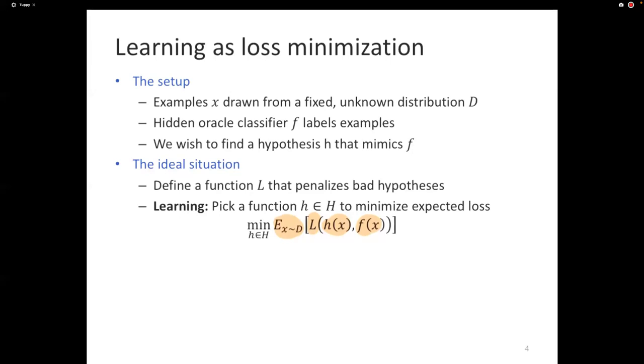And the loss function basically gives you a number that says, when you apply h to this example and produce this label, this is how bad it is. And you find the expected value of the loss. And the goal of learning is to find the hypothesis that minimizes the expected loss.